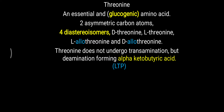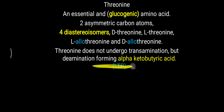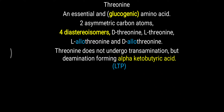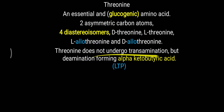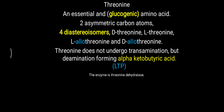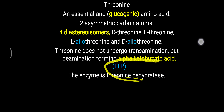For the transamination reaction, remember three particular amino acids using the mnemonic LTP: Lysine, Threonine, and Proline. These three do not undergo the transamination reaction. Threonine instead undergoes deamination to make alpha-ketobutyric acid, and the enzyme required for this is threonine dehydratase, which helps form alpha-ketobutyric acid.